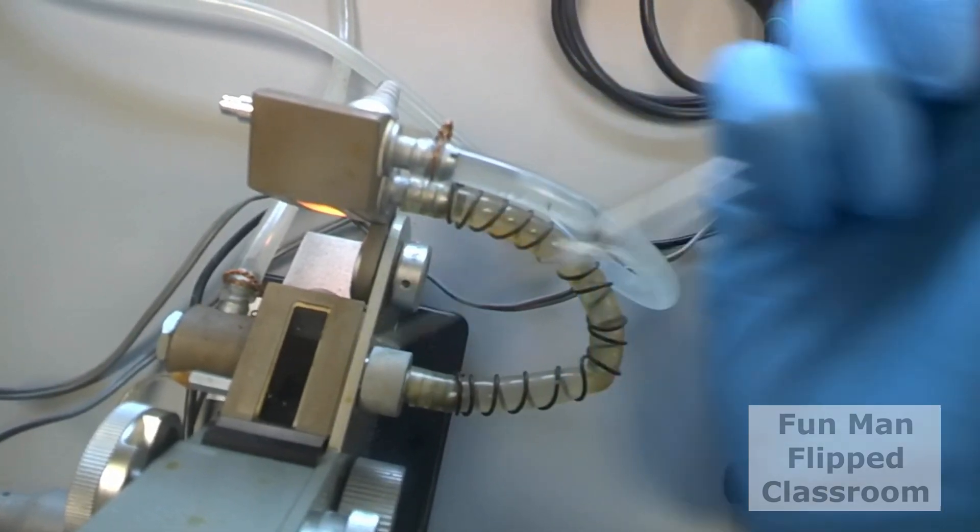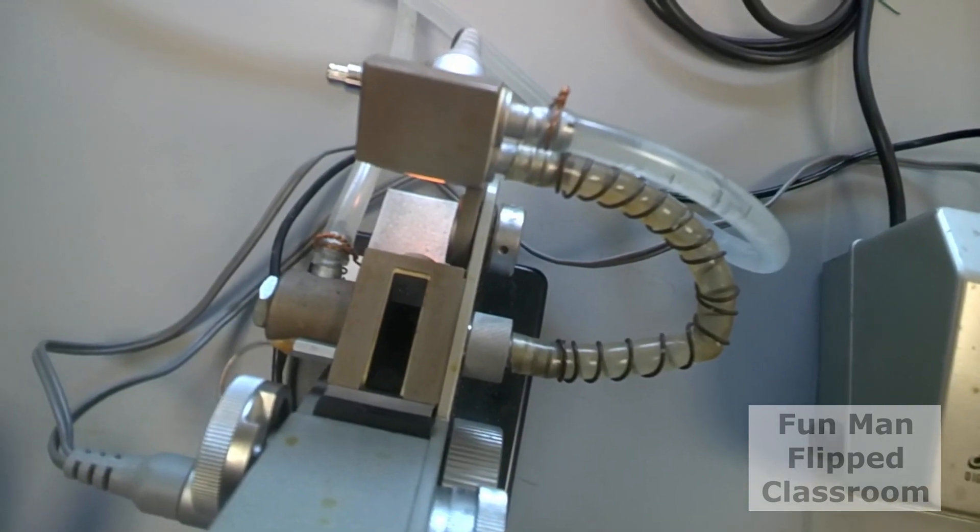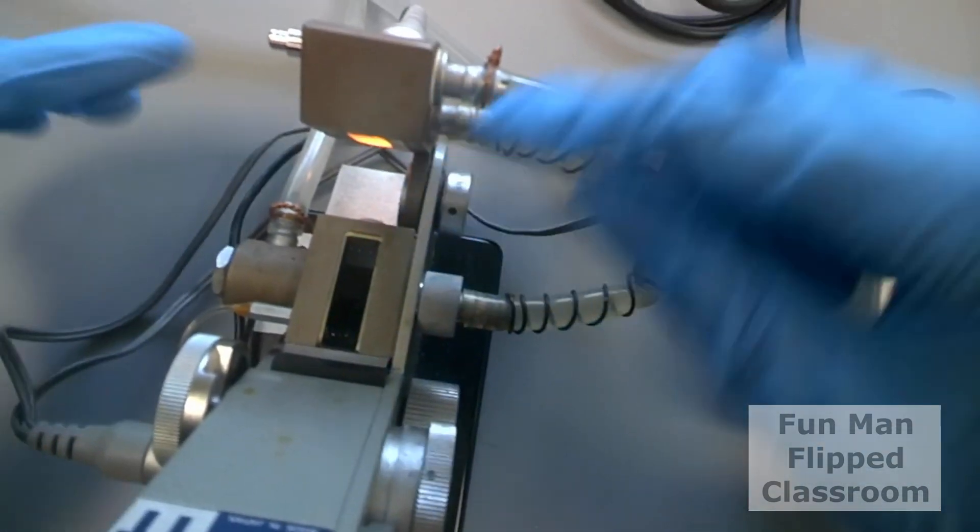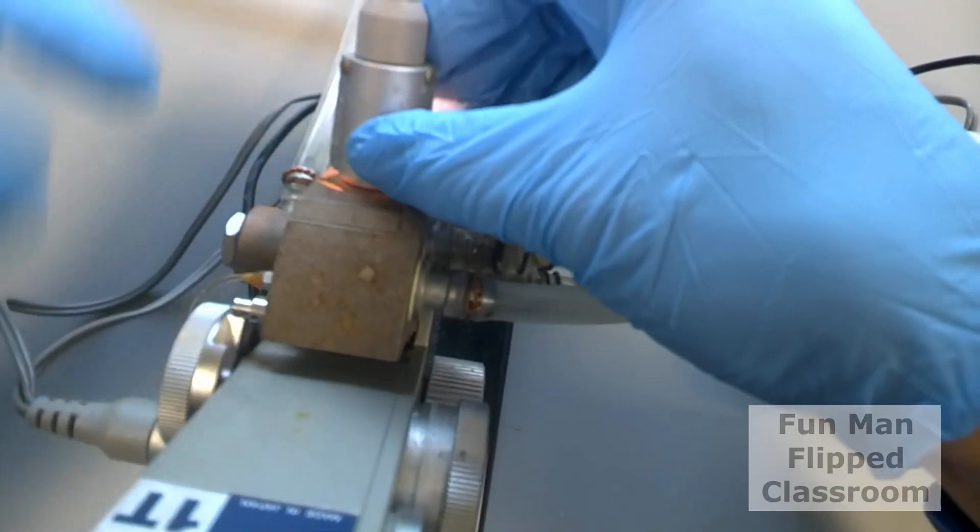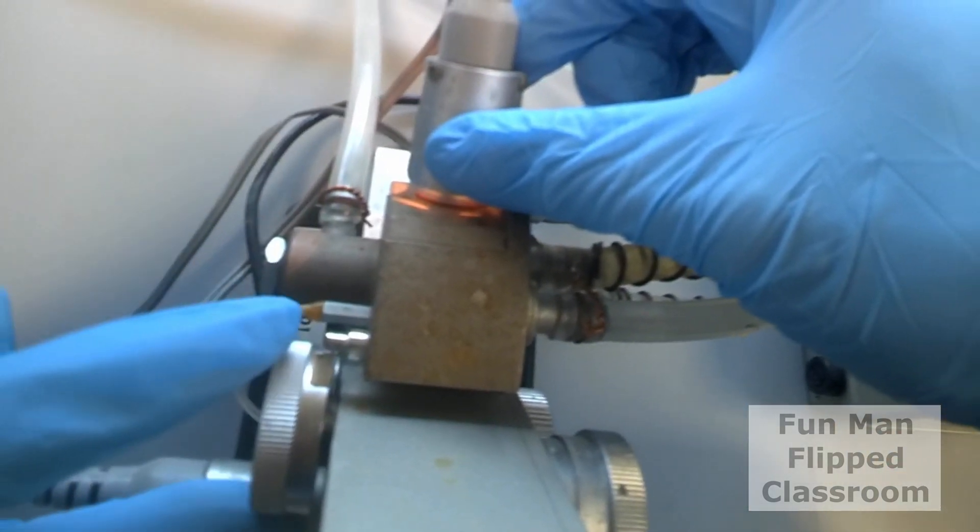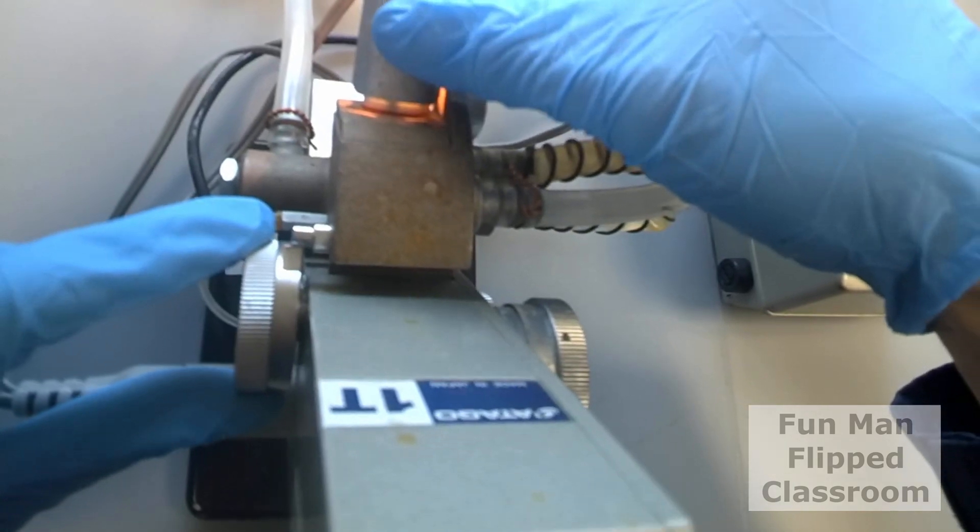Place several drops onto the sample prism. If you don't use enough sample, it will be difficult to see the mark. Too much sample will cause splashing and potentially contaminate the area. Close the sample prism firmly and rotate the prism switch to lock it in place.